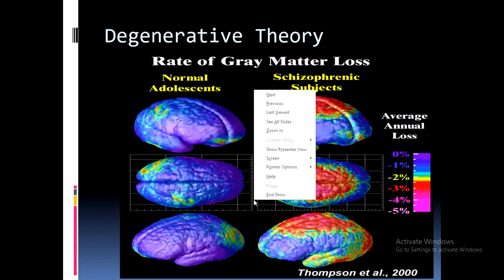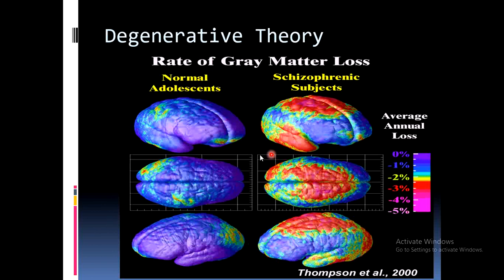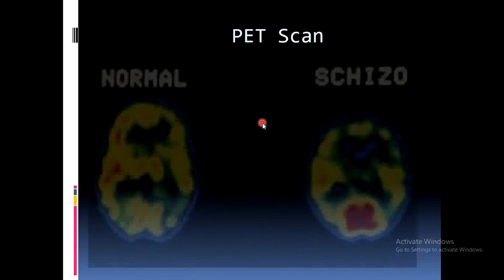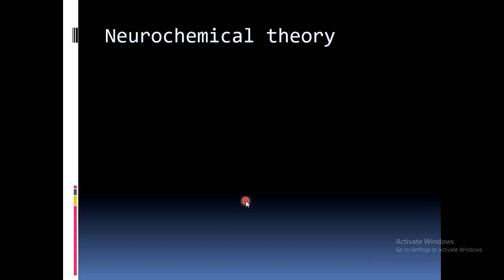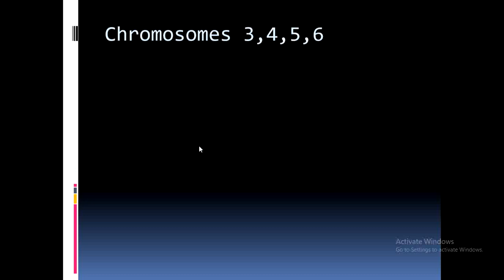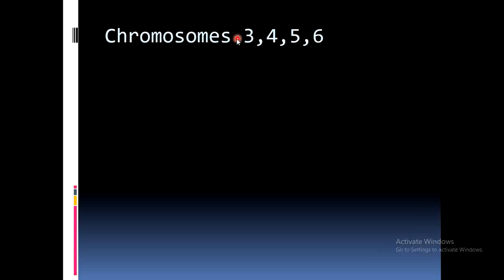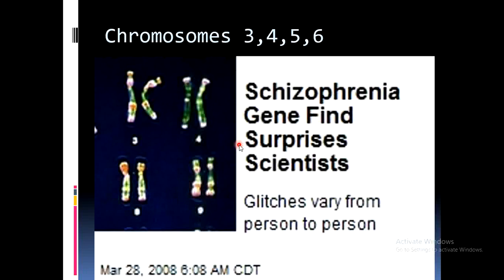Brain imaging comparisons show that a normal adolescent brain differs from a schizophrenic subject's brain activity. PET scan abnormalities are visible — here you can observe a normal brain compared to a schizophrenic brain, showing differences in neurochemical activity including dopamine, serotonin, and GABA receptors. Chromosomal abnormalities have also been suggested, particularly in chromosomes 3, 4, 5, and 6 — these autosomes have been implicated as contributing to schizophrenia.